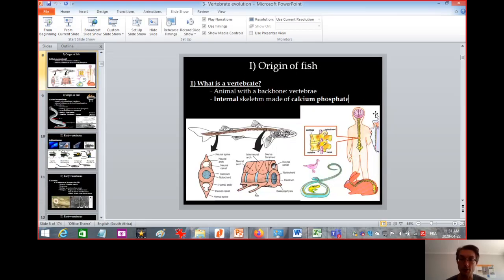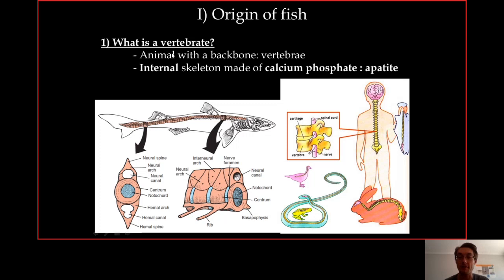Invertebrates have an external skeleton made of calcium carbonate, but vertebrates have an internal skeleton made of calcium phosphate or apatite. This skeleton starts with the backbone and apatite is found throughout — in the skull, fins, and teeth. The animals with a backbone are very diverse: mammals, reptiles like this snake, amphibians like this frog, birds, and fish.